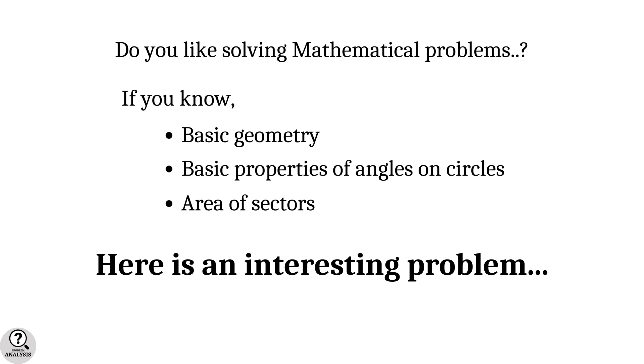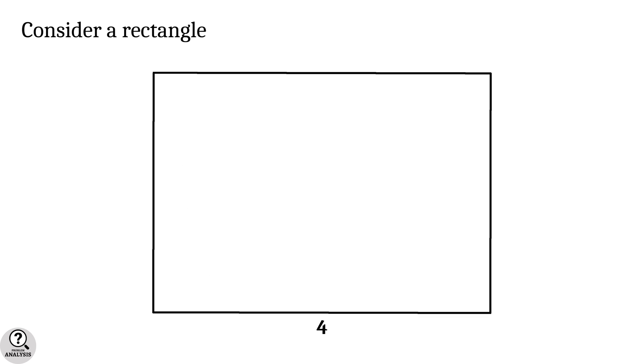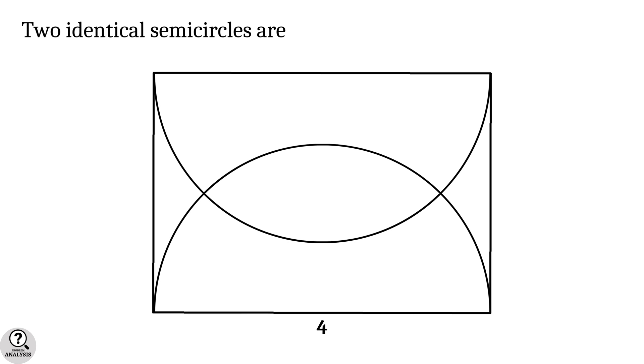Consider a rectangle with length of four units. Now two identical semicircles are placed inside the rectangle as given in the picture.